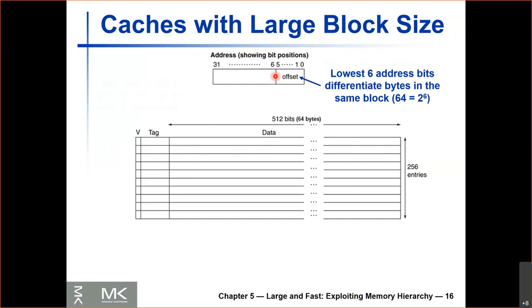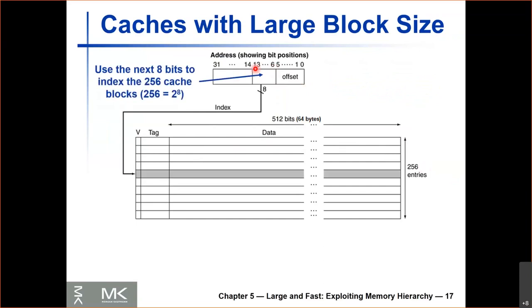To index the cache, we start after the first six bits. We need eight bits to index the cache, because we have 256 entries and 256 is 2 to the power of 8. So bits 6 through 13 are the 8-bit index used to find which block in our cache this address maps to.